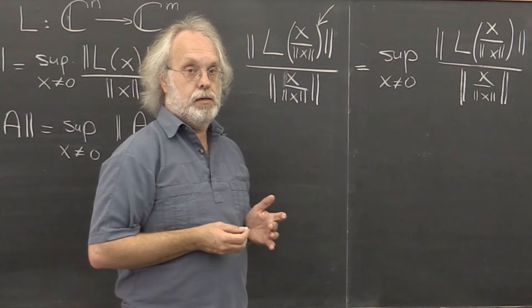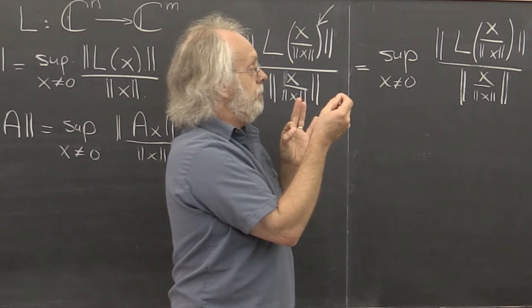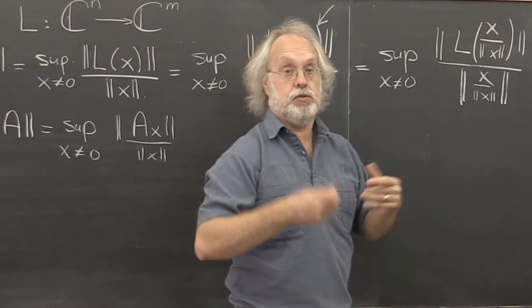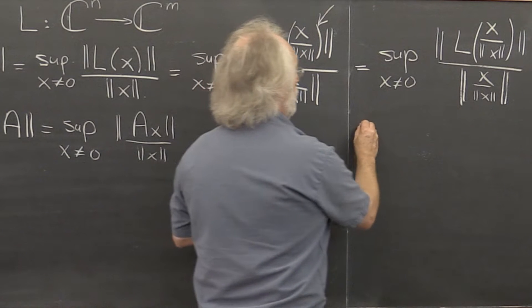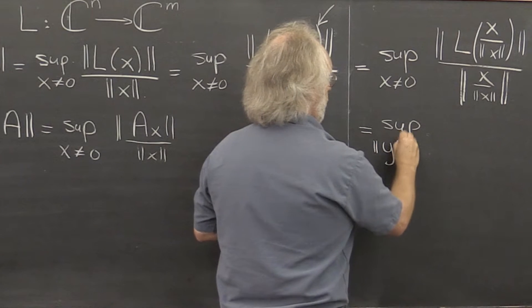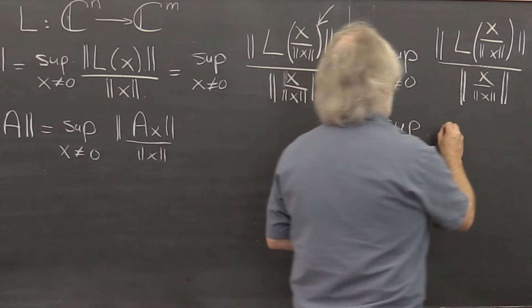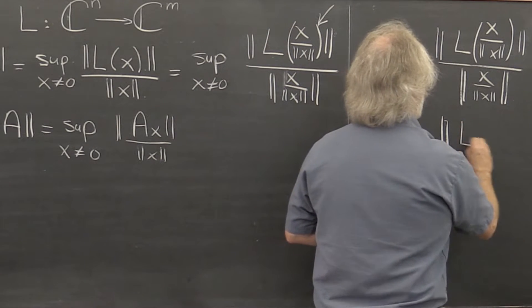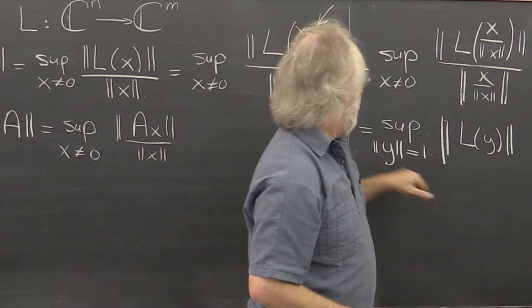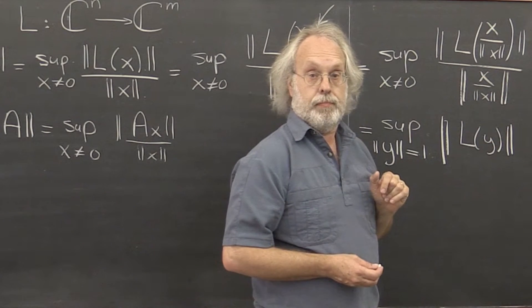But if you think about it, if you look at all possible vectors and you scale them to be of length 1 and then you look at how they're being stretched, then you can also say that's the same as the supremum over all y that have length 1 in the given norm, of ||L(y)|| / ||y||. But notice that this is just 1.